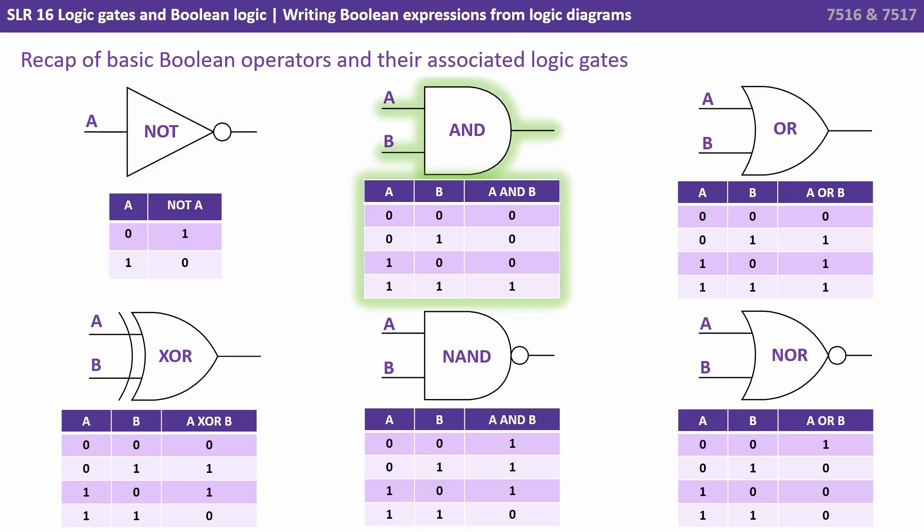We have an AND gate. If both inputs are true the output is true. We have an OR gate. Only one input needs to be true for the output to be true.